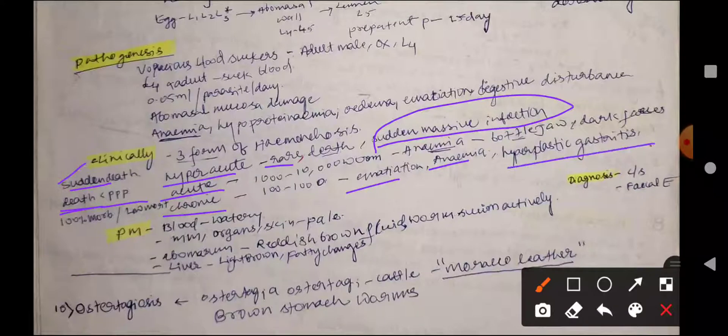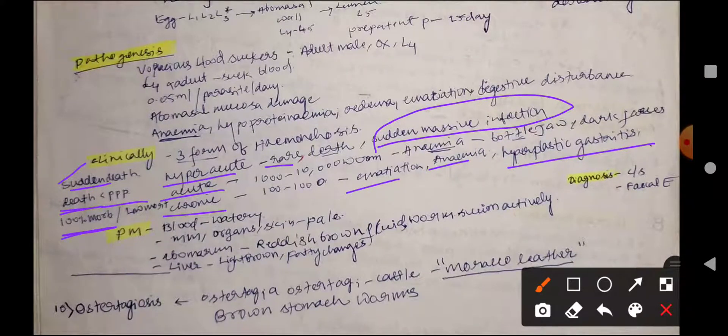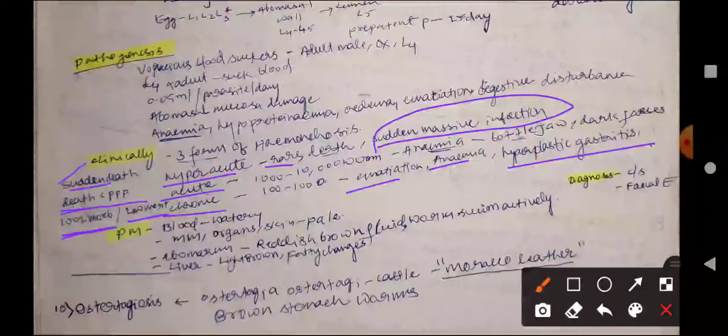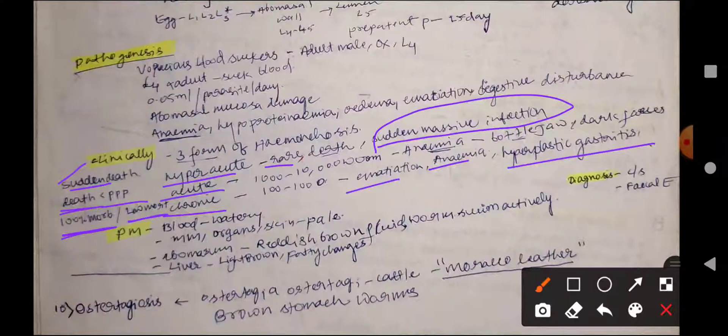In the chronic form, there is 100% morbidity but low mortality as compared to hyperacute or acute.